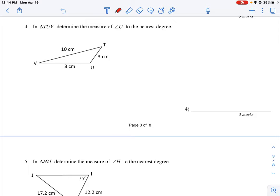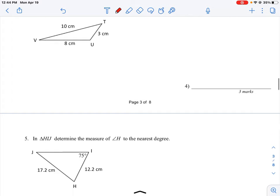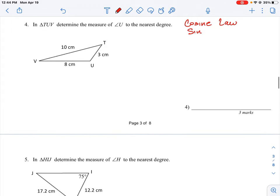So to this point, we've discussed two trig laws in this unit. One is the cosine law and one is the sine law. And one of the things you need to understand is when do you use which one in order to set this up. So the question here is in triangle TUV, three points, determine the measure of angle U to the nearest degree.